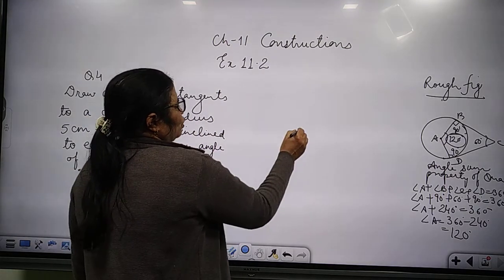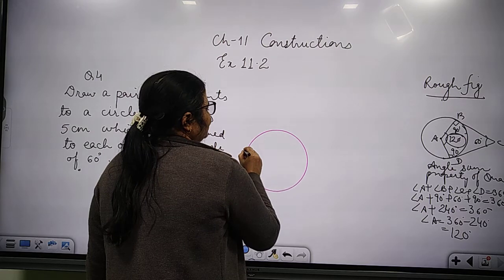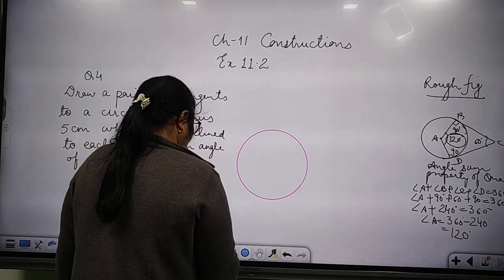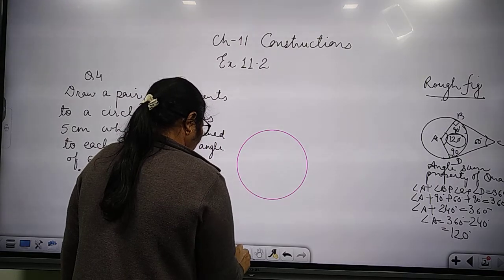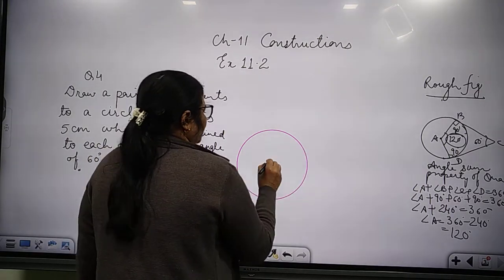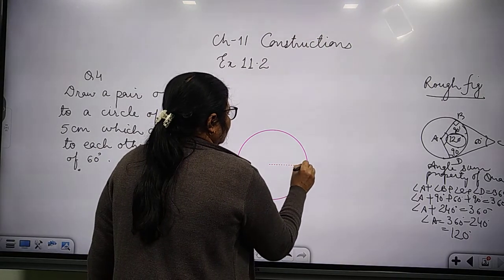So here, let's draw a circle of radius 5 centimeters. Here it is, 5 centimeters.